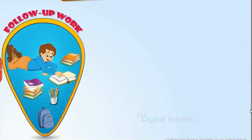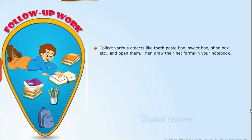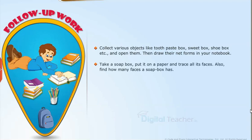Follow-up work: Collect various objects like toothpaste box, sweet box, shoe box, etc. and open them. Then, draw their net forms in your notebook. Take a soap box, put it on a paper and trace all its faces. Also, find how many faces a soap box has.